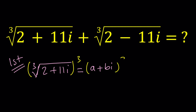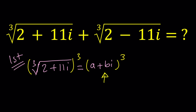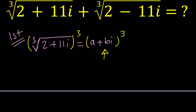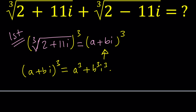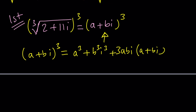When you cube both sides, you get the cube of (a + bi). Let's expand this. What is (a + bi) to the third power? I use an identity: cube the first term (a³), cube the second term (b³i³), and then add 3ab·i multiplied by (a + bi). It's the same as using the binomial theorem, just written differently.